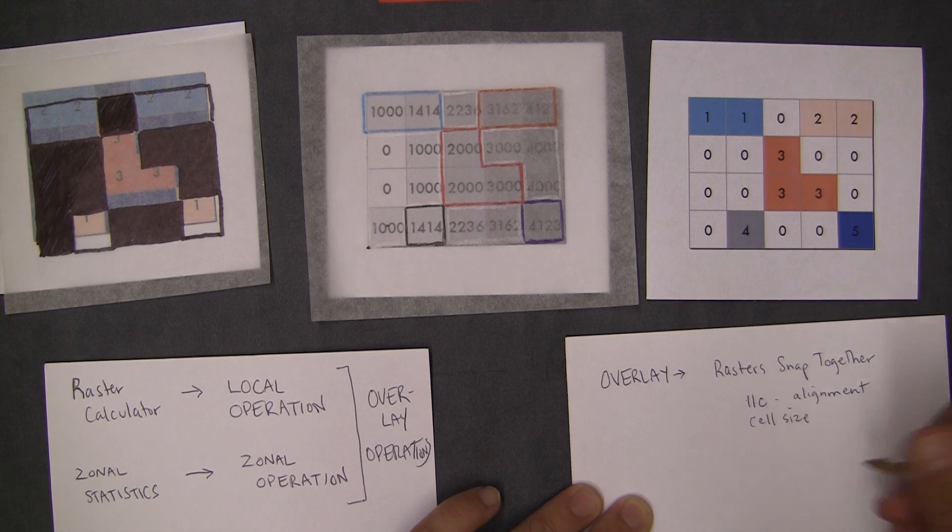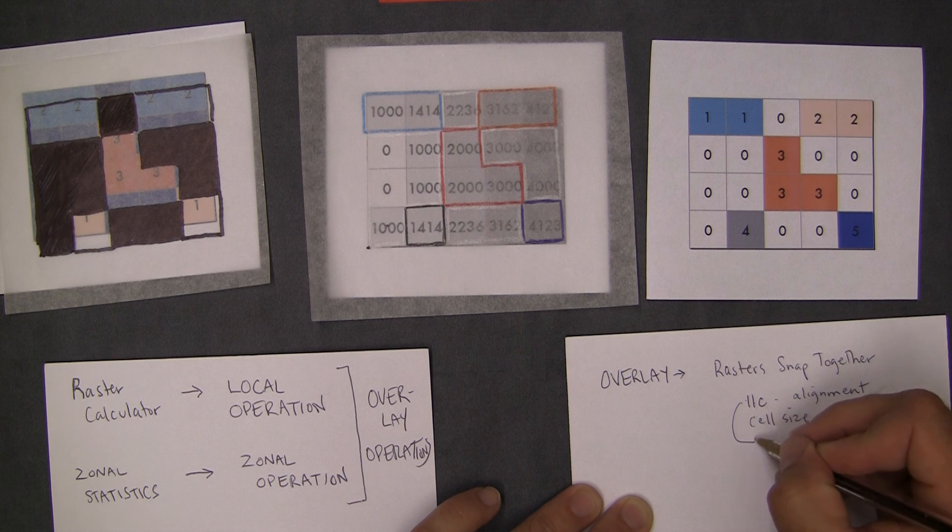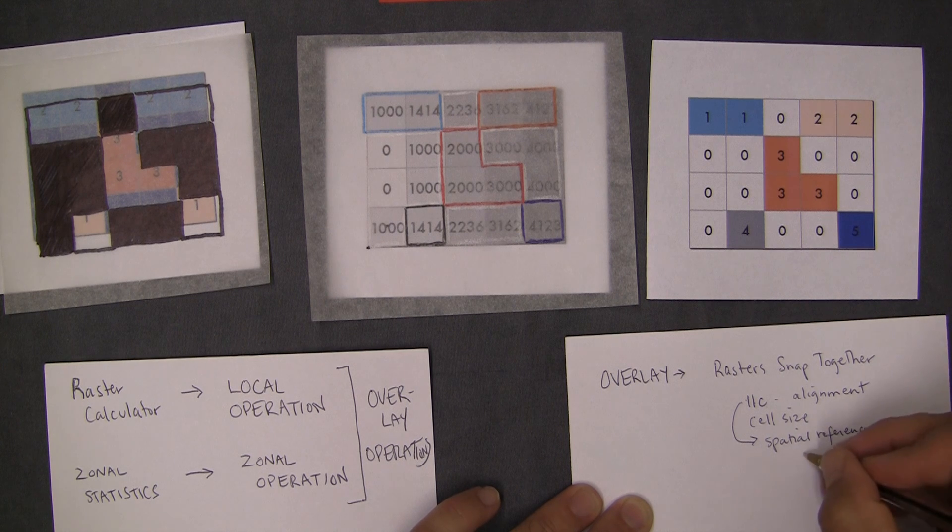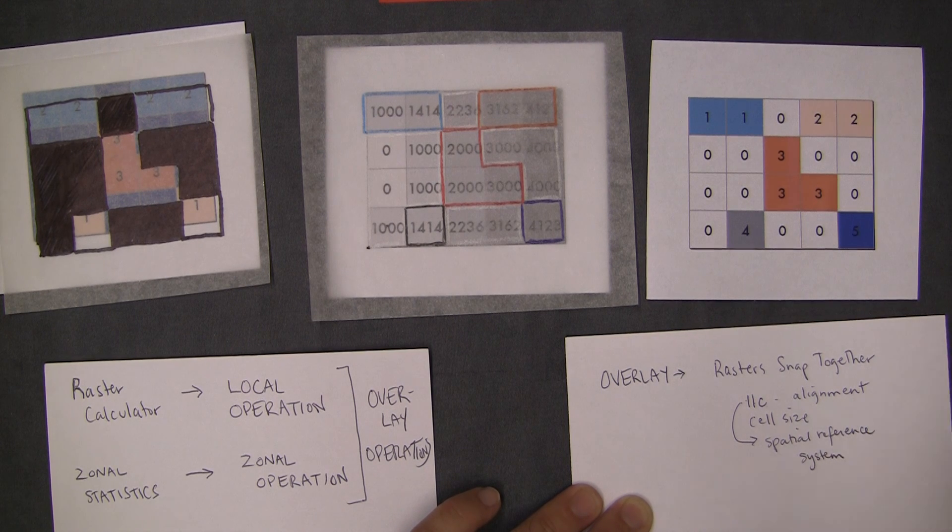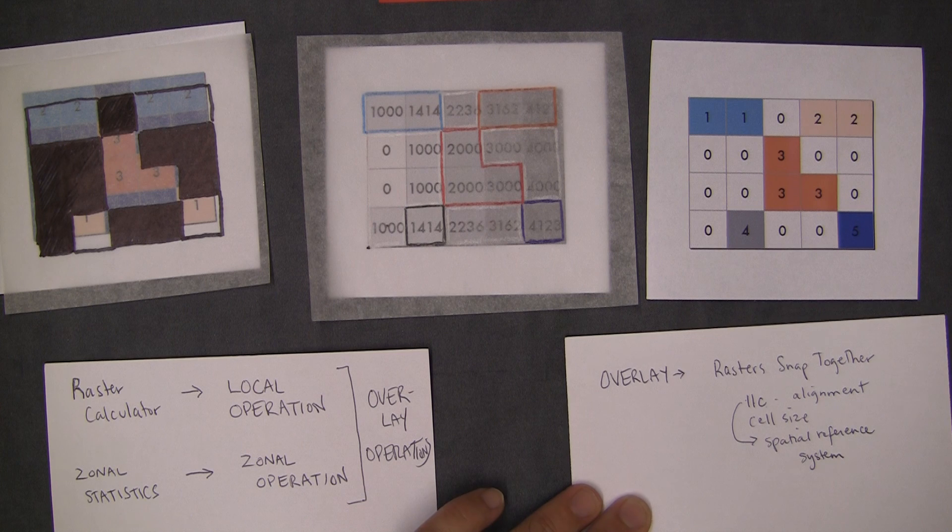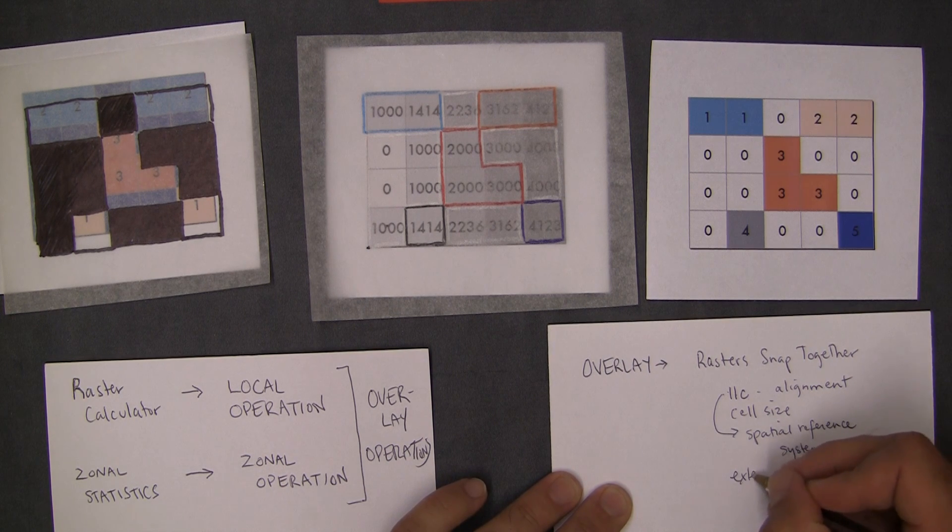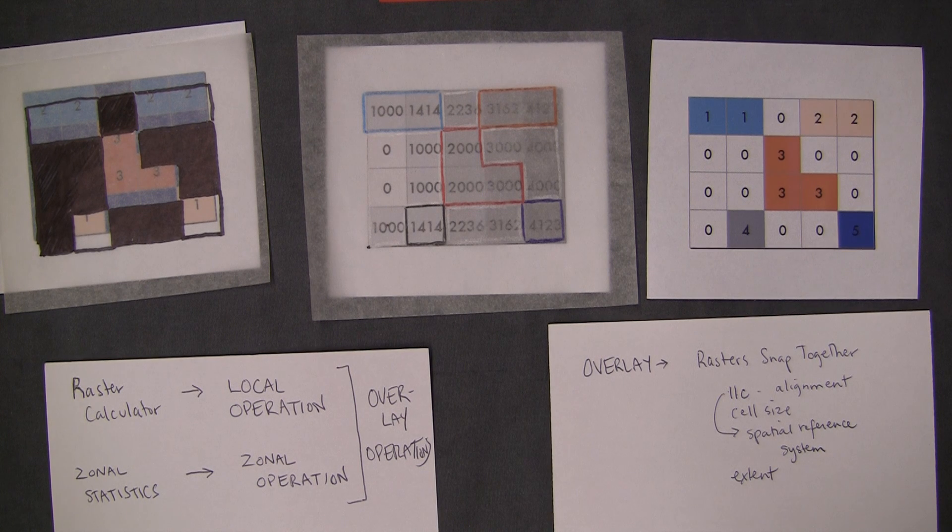This is partly the kind of alignment. So, and that's from the lower left corner. It's also from the basic spatial reference system, which we keep on talking about without really talking about. So we'll talk a little bit more about the spatial reference system as things progress. And what else? The extent.